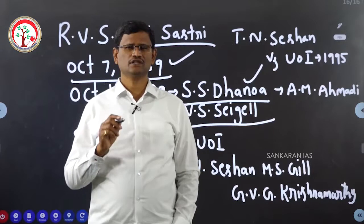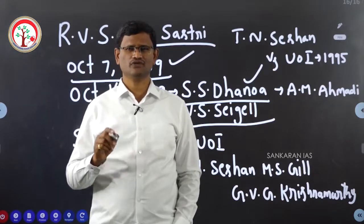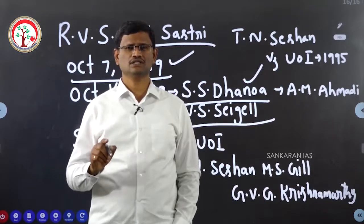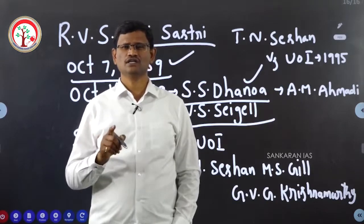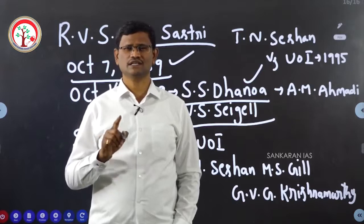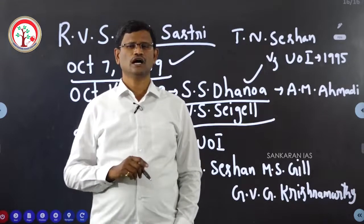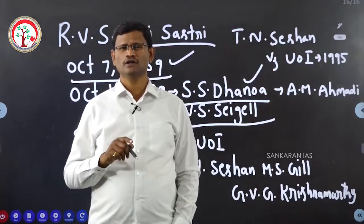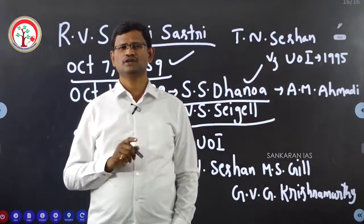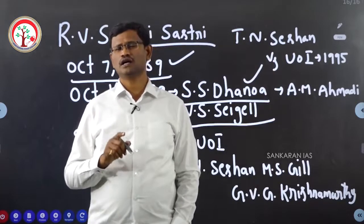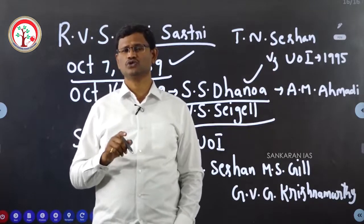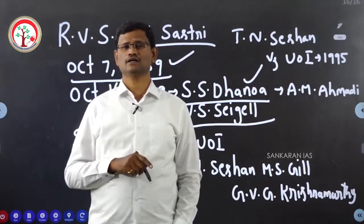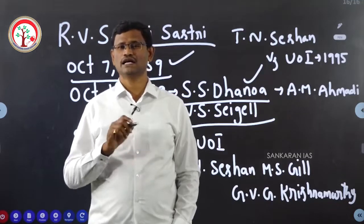When the Election Commission of India became a multi-member body for the first time on October 16th 1989, it functioned as a multi-member body for 70 days. Subsequently, after the elections to the 9th Lok Sabha were over, V.P. Singh became the Prime Minister of India and the notification issued by the earlier government was done away with.